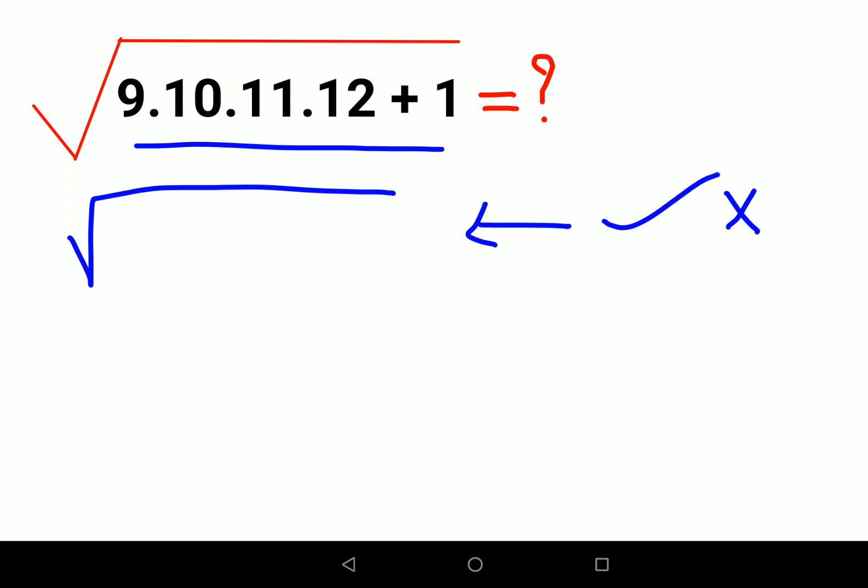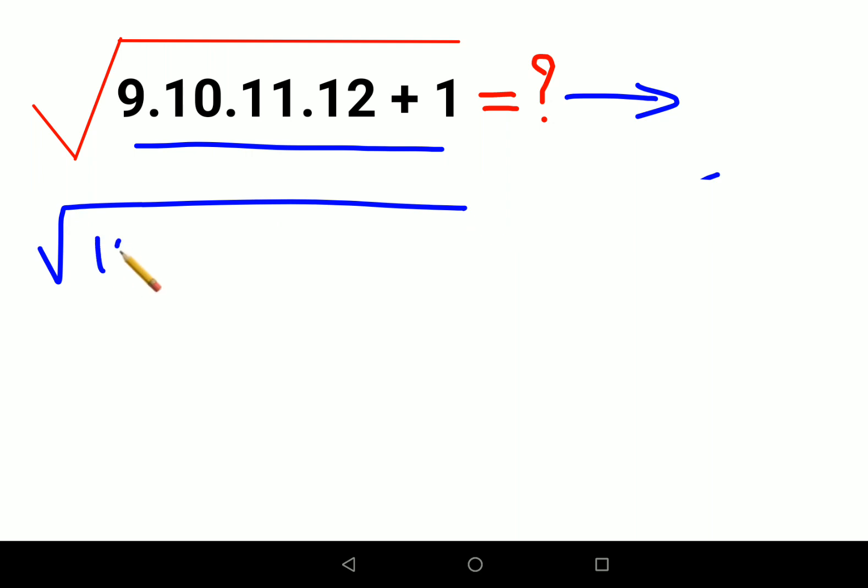I'll explain what happens. Normally people will think, let's write 9 as 10 minus 1, keep 10 as it is, and then keep 11 as 10 plus 1. Then it is 12 into 12 plus 1.